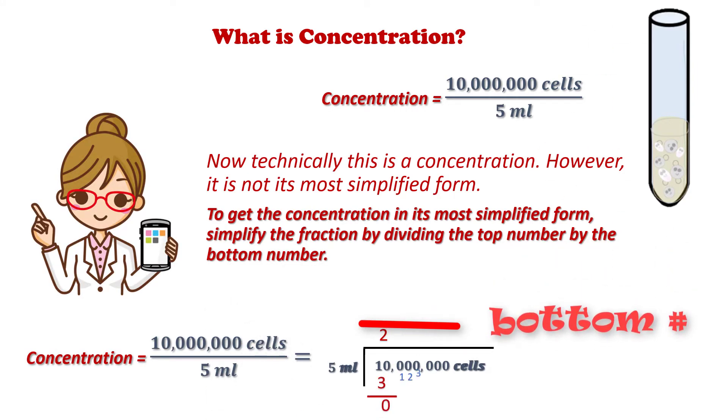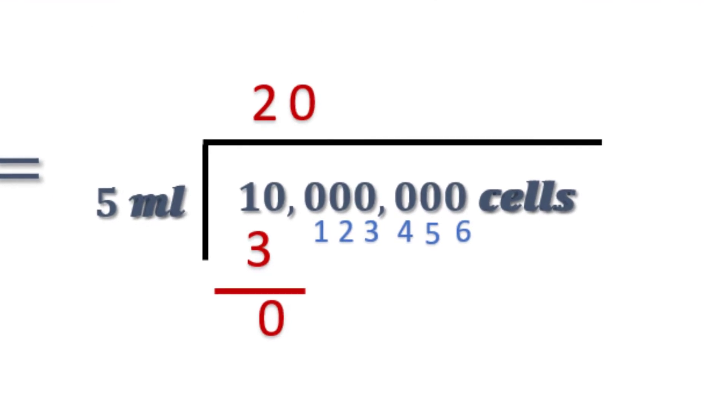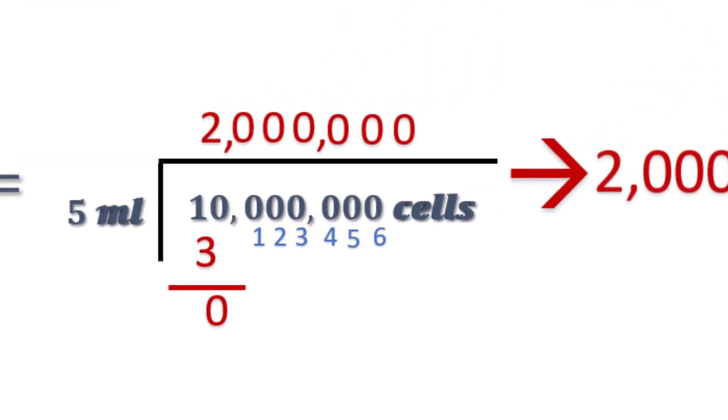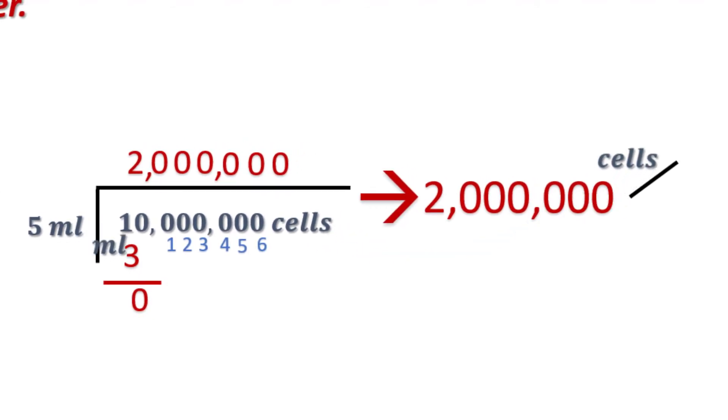We'll divide the top number by the bottom number. We ended up with 2 million cells per milliliter. That's our concentration. Thank you.